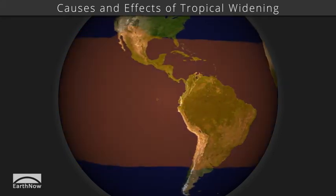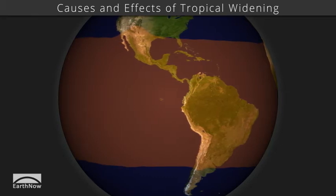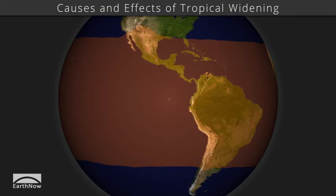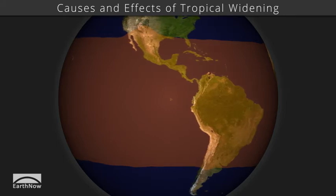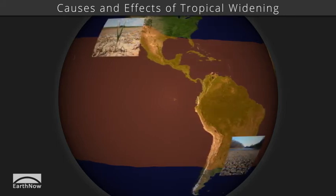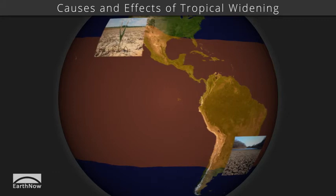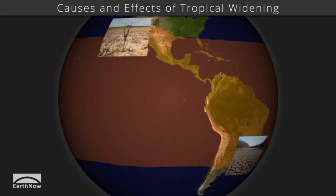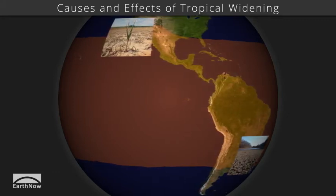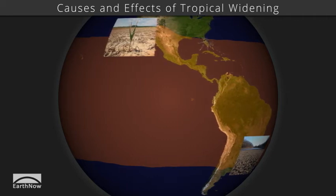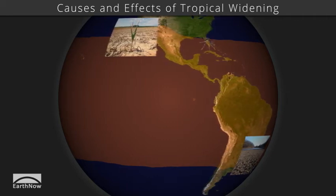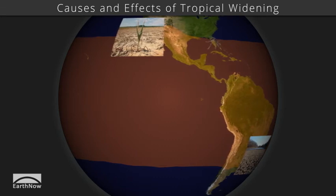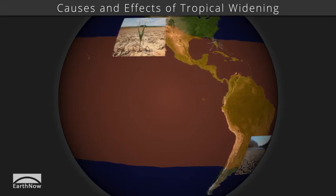Widening the tropical zone poleward impacts storm tracks and the water cycle, affecting places where many people live. Increased drought is likely in such places as southwestern United States, the Middle East, and southern Australia. Additionally, tropical diseases such as the mosquito-borne dengue fever are starting to spread poleward, as recent outbreaks in Florida, Portugal, and even Russia have been reported.